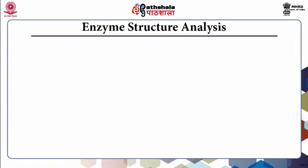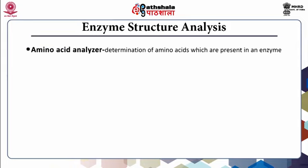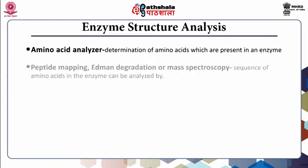Analysis of enzymes and protein structure can be done with the help of advanced analytical techniques and equipment. Determination of amino acids present in an enzyme and the molar ratios of each can be analyzed by an amino acid analyzer. The sequence of amino acids in the enzyme can be analyzed by peptide mapping, Edman degradation, or mass spectroscopy.